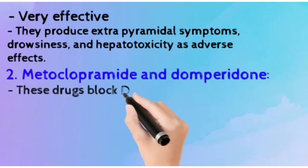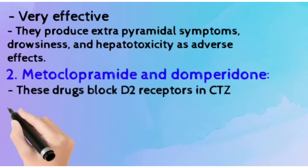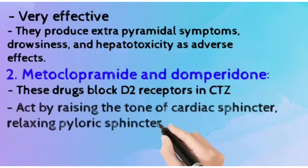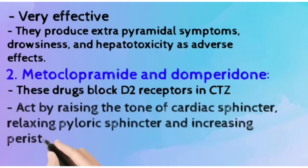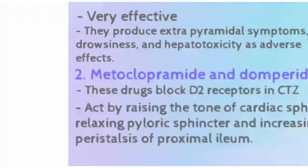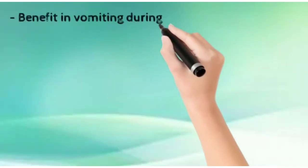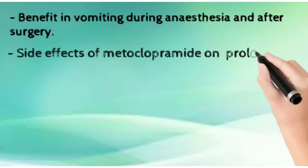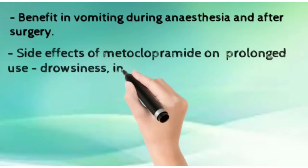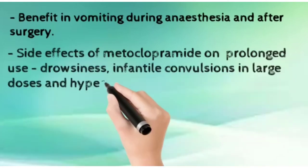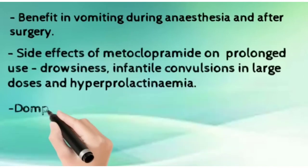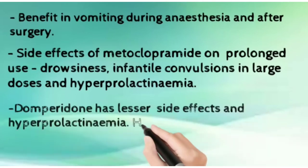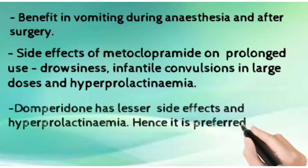Metoclopramide and domperidone block the D2 receptors to prevent vomiting. They act by raising the tone of the cardiac sphincter, relaxing the pyloric sphincter, and increasing peristalsis. They benefit vomiting during and after anesthesia and surgery. Side effects of metoclopramide on prolonged use include drowsiness and infantile convulsions in large doses. Domperidone has fewer side effects and is therefore more preferred.